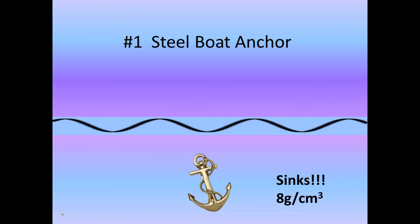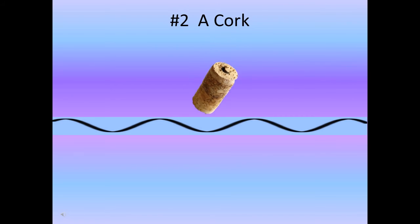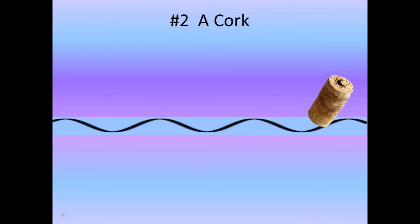The steel boat anchor sinks. Steel has an average density of 8 grams per centimeter cubed, which is definitely greater than water's density of 1 gram per centimeter cubed. Next up: cork actually floats! Cork has an average density of 0.24 grams per centimeter cubed — less than water — so it floats.